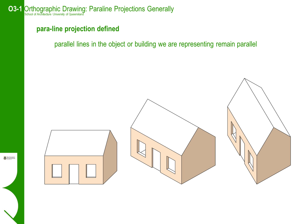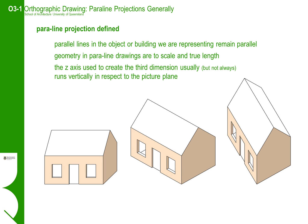Paraline drawings are defined as follows. There are no converging lines in the construction of the three-dimensional view. Parallel lines in the object or building we are representing remain parallel in the paraline drawing. The geometry in a paraline drawing is to scale and is true length, making them both easier to construct than perspective views and useful if you need to interpolate drawings. The z-axis used to create the third dimension is typically, but not always, vertical in respect to the picture plane.